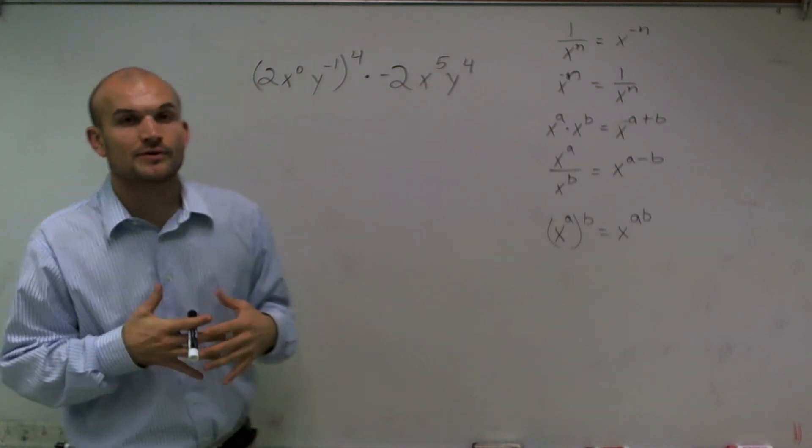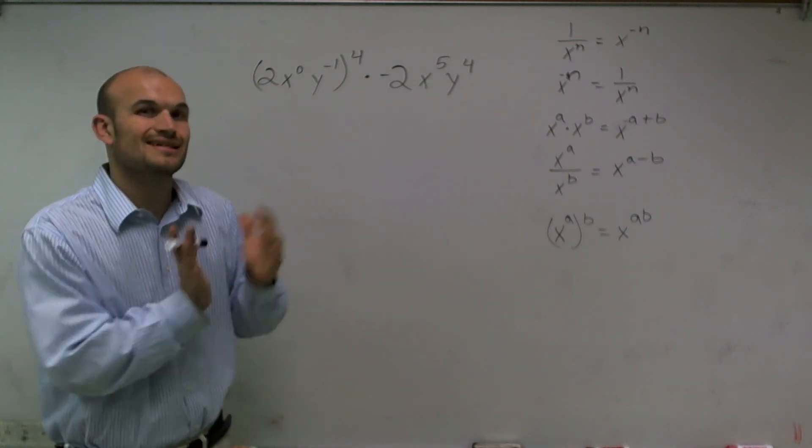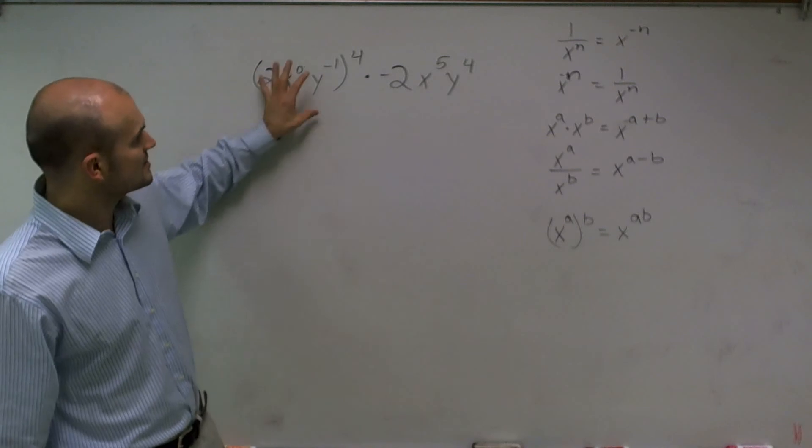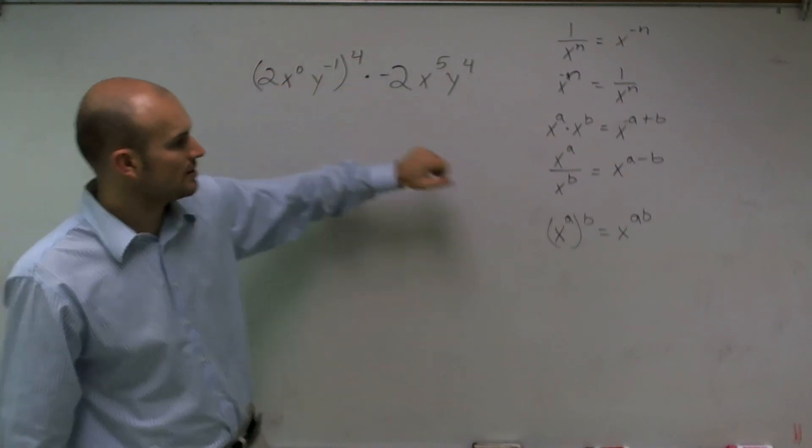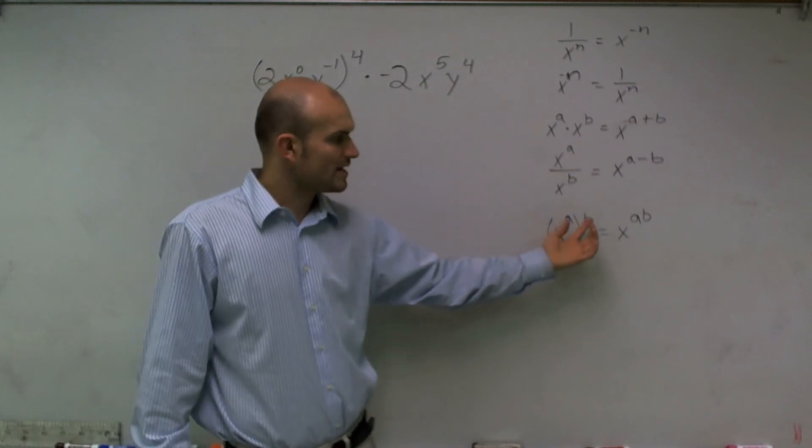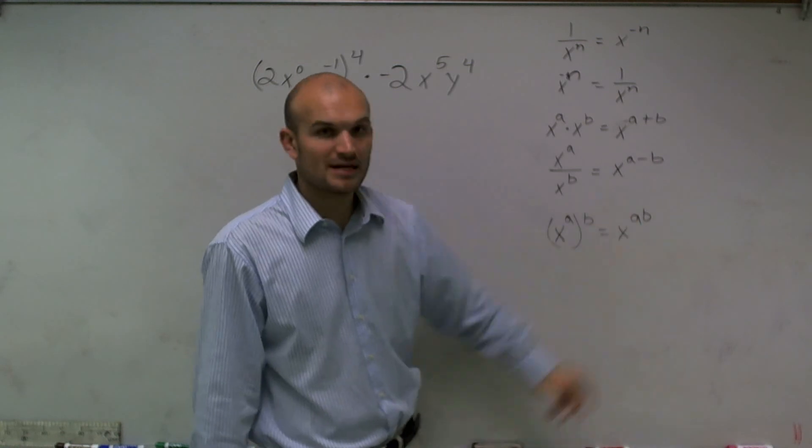So the first thing I want to do is part of PEMDAS. I see I have parentheses up here, so I'm going to want to make sure I distribute to get rid of those parentheses. So what I notice is I have a term here with a couple of exponents raised to another power. So when I have something raised to another power, I'm going to multiply my two exponents.